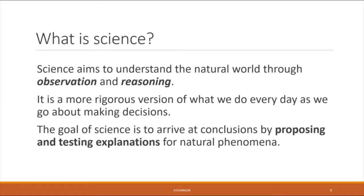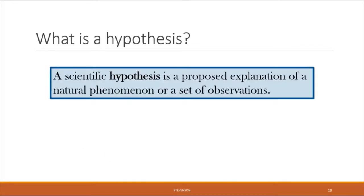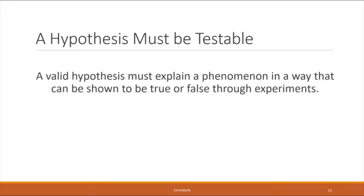The goal of science is to arrive at conclusions by proposing and testing explanations for natural phenomena. A proposed explanation for a natural phenomenon that you test is called a hypothesis. A scientific hypothesis is a proposed explanation of a natural phenomenon or set of observations. The key thing about a hypothesis is that it must be testable — you have to be able to show whether it is true or false through experimentation. If there is no possible way to design an experiment to test it, then it is not a valid scientific hypothesis.